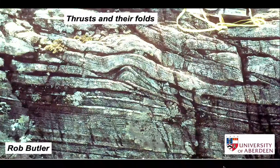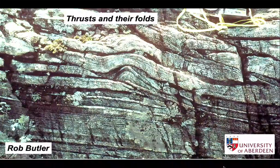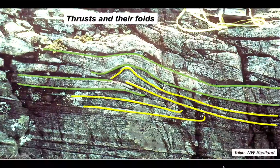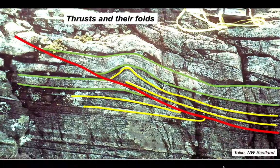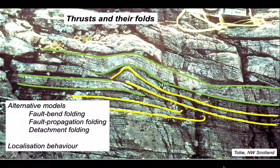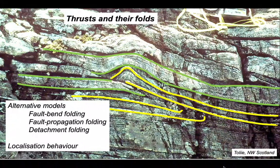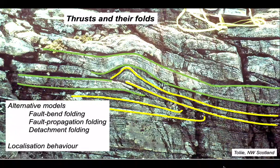Thrust faults commonly have associations with folds. We can bring this out more if we add some interpretation. Here's some layering and there's the fault going through. In this presentation we're going to look at alternative models for the relationships between folding and faulting. We'll try and unify some of these ideas by considering the patterns of deformation associated with fault localization.